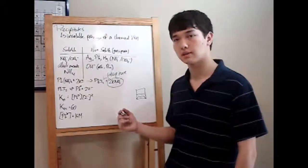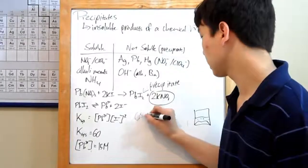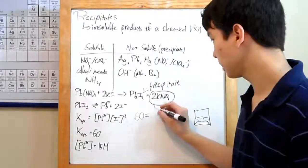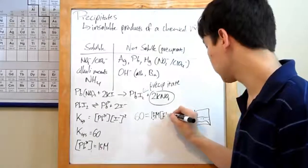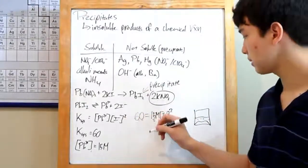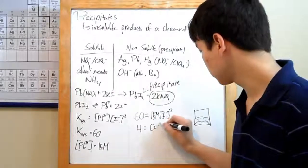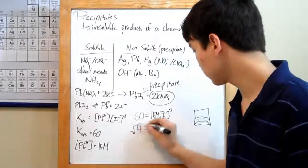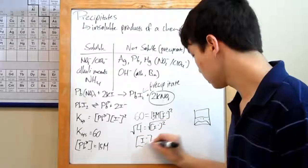Using that, we can solve for the concentration of I- ions. All we need to do is plug in. Our K is 60, and we have a Pb2+ of 15 molar. Unknown I- concentration, but we do know whatever it is, it's squared. 60 divided by 15 will give us 4, and so that's the concentration of I- squared. All we have to do is square root both sides, and we find out the concentration of I- is just 2 molar.